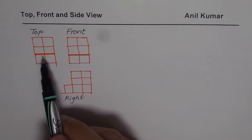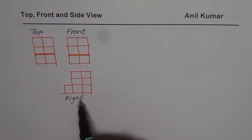So we are given top view, front view and right view of a cubic structure. We need to sketch the three-dimensional figure here.